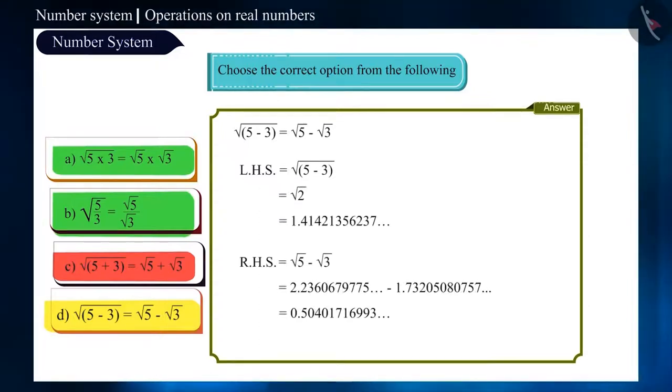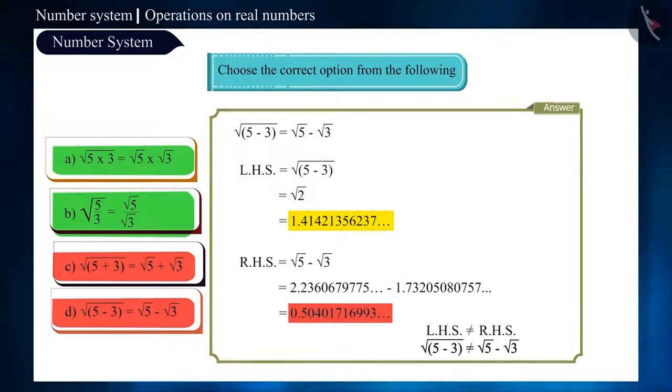Here also, the value of root of 2 is not equal to the value of root of 5 minus root of 3. This means that this option is also wrong.